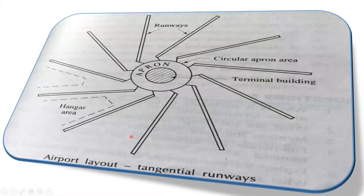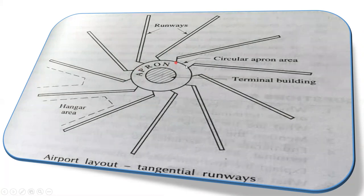The last layout we have is tangential runways. In the center we have a terminal building, and surrounding it we have aprons — because through aprons only the aircraft will go to the runways. This is a circular apron area. All the other runways are arranged tangentially around it, and in one position there is a hangar area for the maintenance of the aircraft. So this is how the airport layout is done: first is single runway, second is parallel, third is non-intersecting, and the fourth is tangential runways.